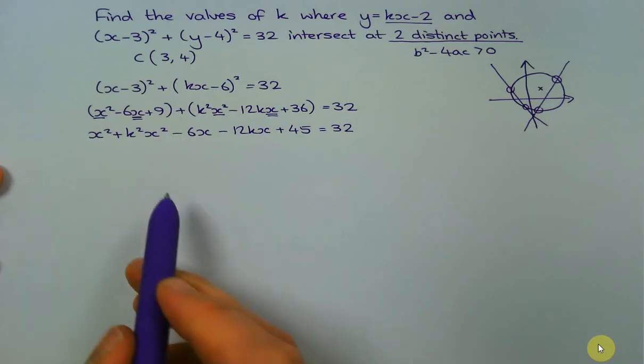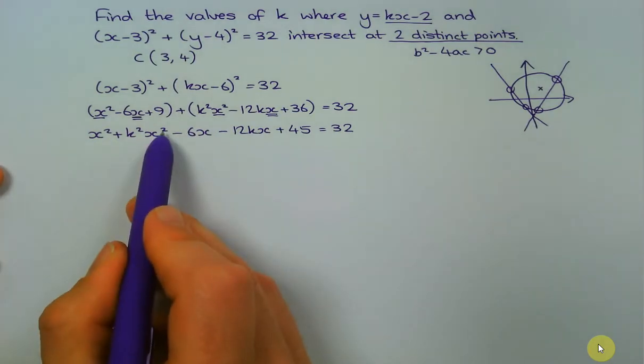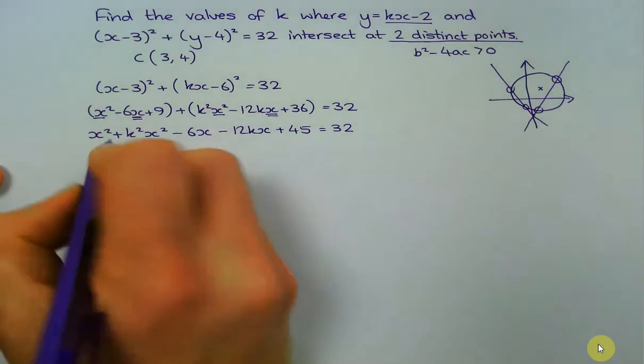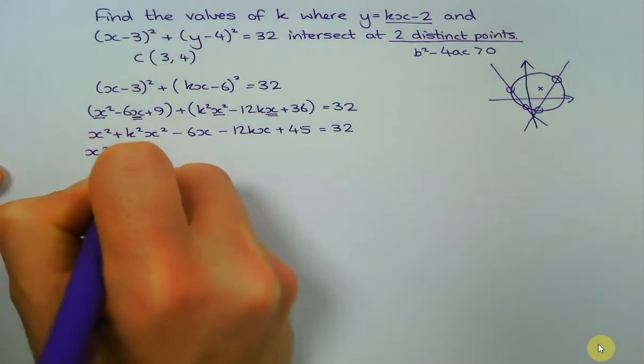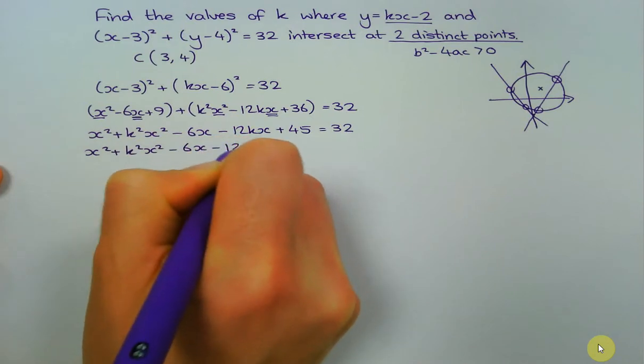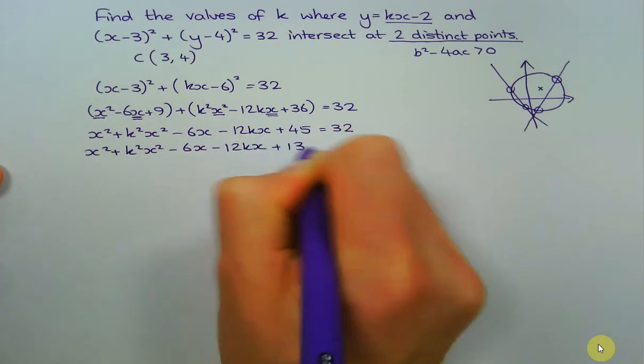Okay, so quadratics, definitely quadratic, so we definitely use our discriminant. But it's not ready because this is not equal to zero. So I'm going to tidy everything onto one side, rewriting everything I've just written but with 13 there.